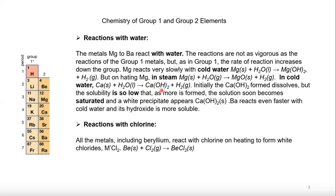In cold water, calcium reacts and gives calcium hydroxide. One interesting thing is that calcium hydroxide is less soluble, so as it is formed it creates a saturated solution within a few minutes and we get a white precipitate. Barium reacts even faster with cold water — reactivity with water increases going down the group.